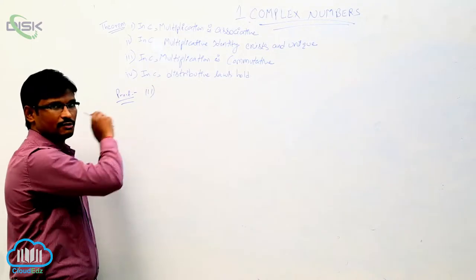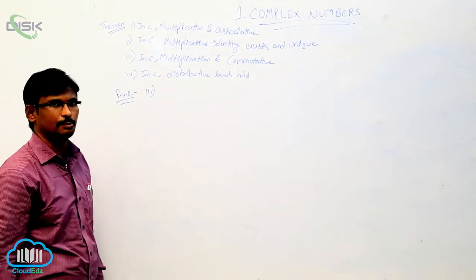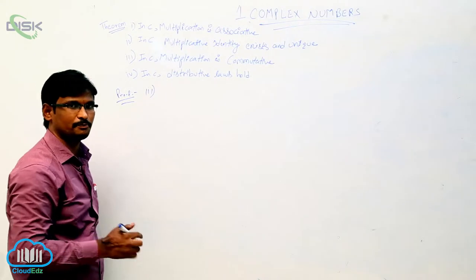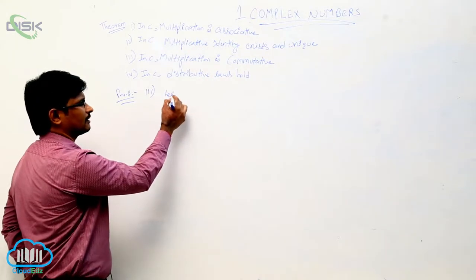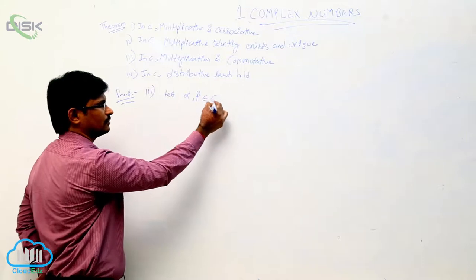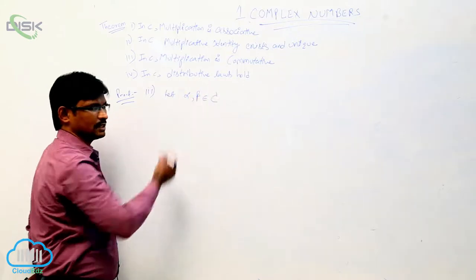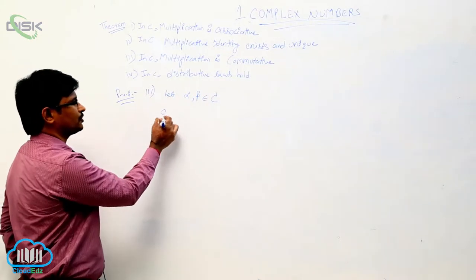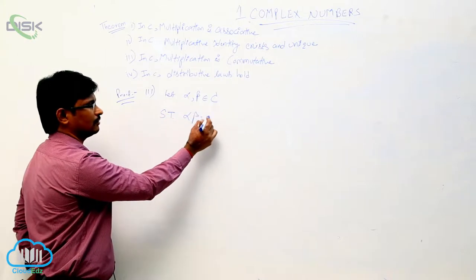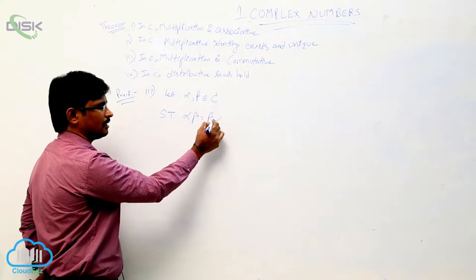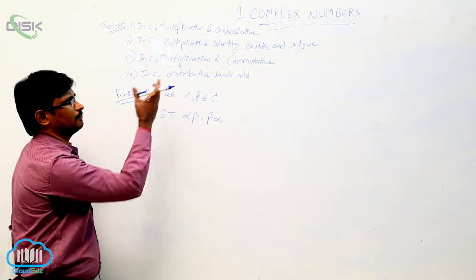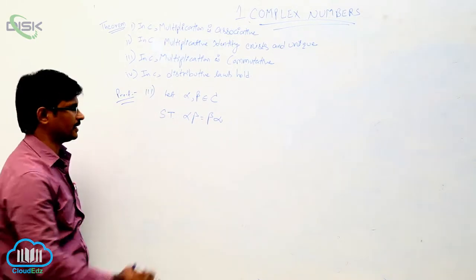We proved just two properties. Now we will see the third property, that is, multiplication is commutative. Let alpha, beta belong to complex numbers. We have to show that alpha·beta equals beta·alpha. If we prove this, then we can say that multiplication is commutative.